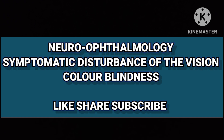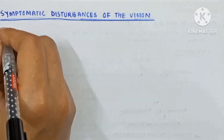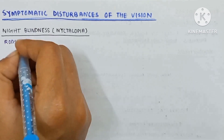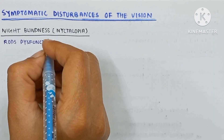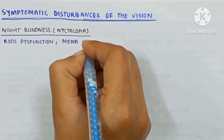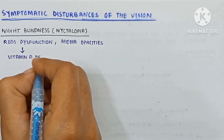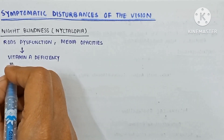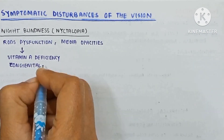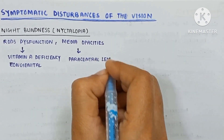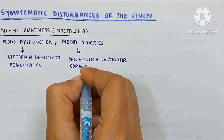Welcome back to my channel. In this video we are going to talk about the symptomatic disturbances of vision. The first is nyctalopia — the rods are dysfunctional in this condition and media opacity may be present. Rod dysfunction is due to vitamin A deficiency or may be congenital, and media opacity is due to paracentral lenticular or corneal opacity.